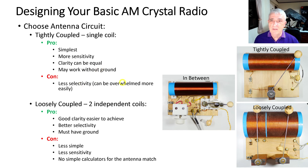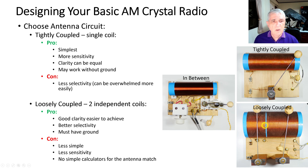The con of tightly coupled is less selectivity — it can be overwhelmed more easily by a loud nearby station. Loosely coupled uses a separate antenna coil that is completely separate from the tuning coil. The antenna comes in, goes through the antenna coil, through the wiper, and out to ground. The two coils — left and right — are not connected to each other.